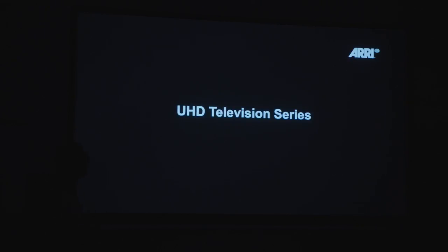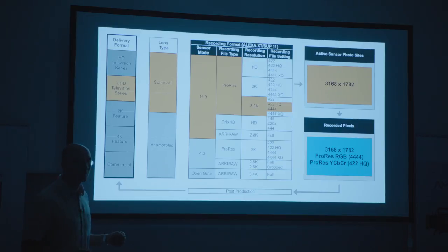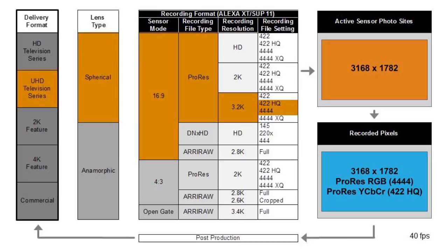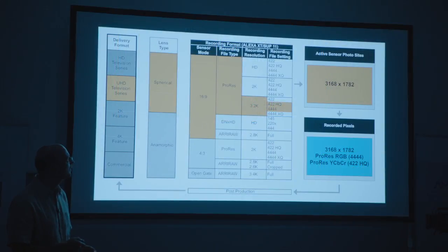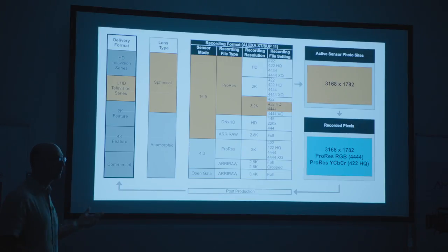Now we're in speculation territory because ProRes 3.2K hasn't been released yet, but once it is, I think UHD television series will shoot spherical 16x9 and record ProRes 3.2K. They'll choose either 4:4:4 for really good quality — though at 700 megabits per second that may be too much for some series — or 422HQ for a lower data rate at higher resolution, giving a YCBCR image into post.